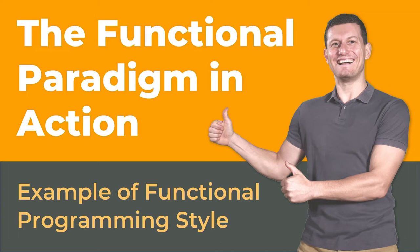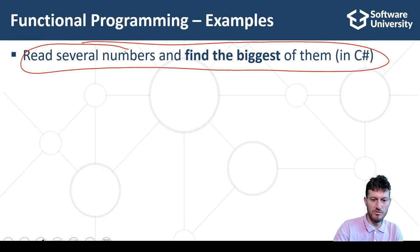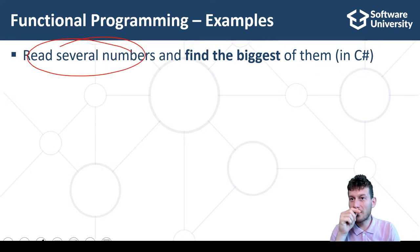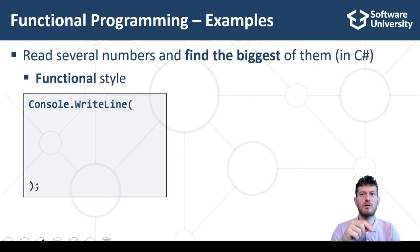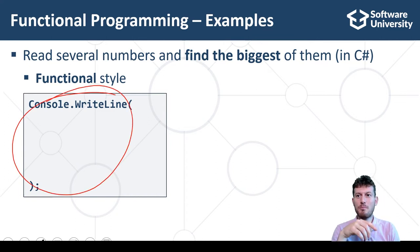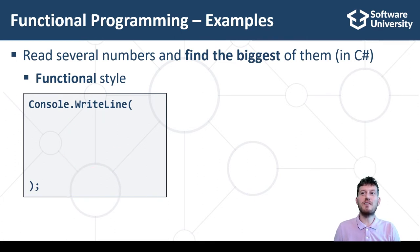Now it's time to show you some code. I will demonstrate the functional style of programming through a sample C-Sharp program written in a classical procedural style and the same code written in a functional style. We want to write a C-Sharp program to read several numbers, find the biggest of them, and print it. To solve this problem in a functional style, we print the result calculated by a composition of functions, starting with console.ReadLine.